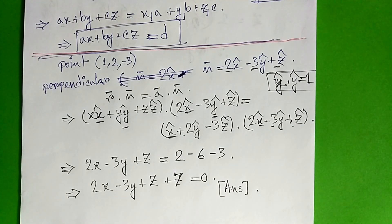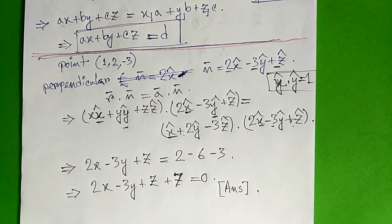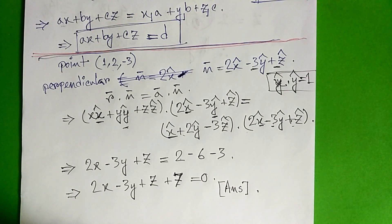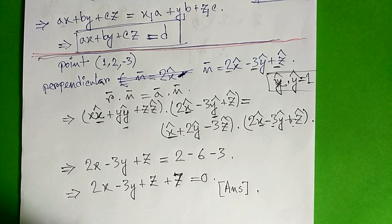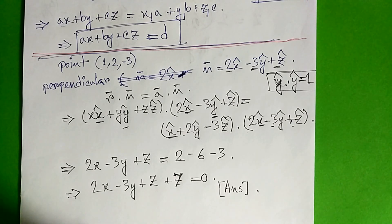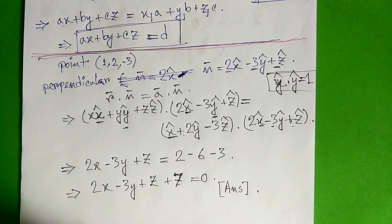So here we have the answer. We had the given point and the perpendicular to a given direction. That is the planar equation. If you have any problems, please let us know in the comments. Subscribe to our channel and thank you for your support.